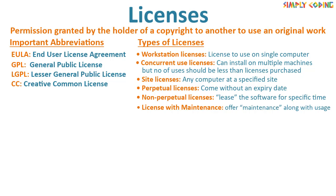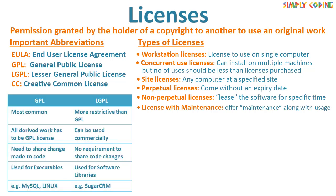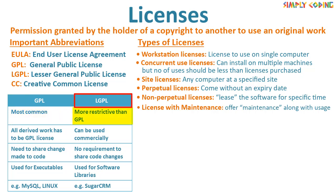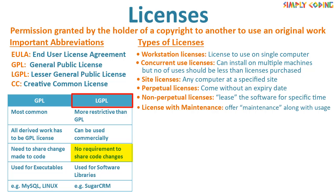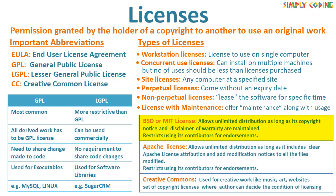Now let's look at different open source licenses. First, the difference between GPL and LGPL. GPL is most commonly used; LGPL is a more permissive version. GPL mandates that all derivative work must be GPL and all changes to code must be shared — so it is mostly used for executables. Examples: MySQL and Linux use GPL. LGPL can be used commercially and there is no requirement to share code changes — that's why it is used mostly for software libraries like SugarCRM. We also have the BSD license, which is almost the same as the MIT license. Both allow unlimited distribution as long as the copyright notice and disclaimer of warranty are displayed and maintained, and both restrict using contributors for endorsements.